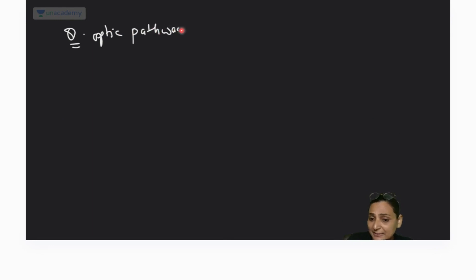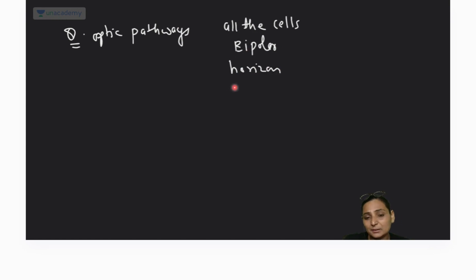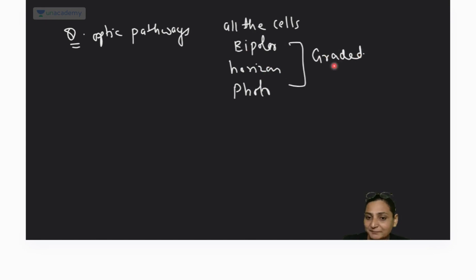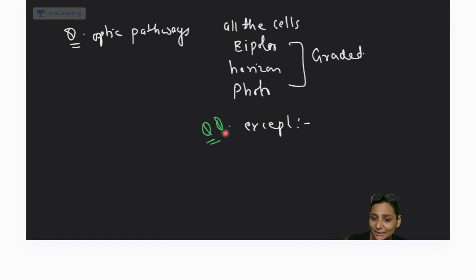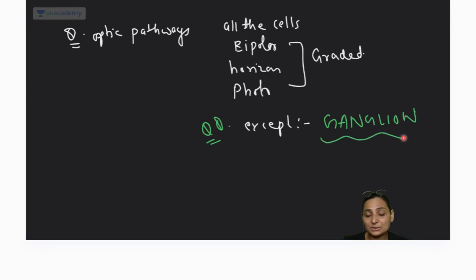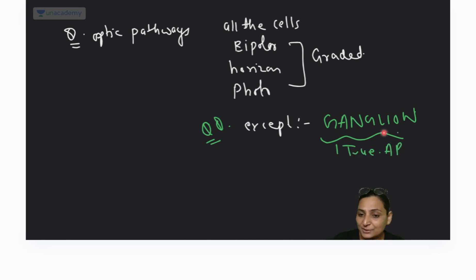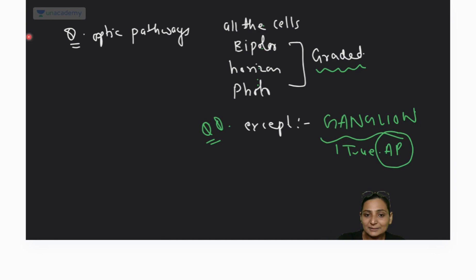In the optic pathway, all retinal cells — bipolar cells, horizontal cells, and photoreceptors — show graded potentials. The only exception is the ganglion cells, which form the optic nerve; they show true action potentials. All other retinal cells show graded or local potentials.